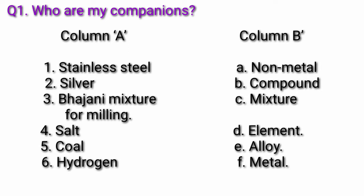Column B. A: Non-metal. B: Compound. C: Mixture. D: Element. E: Alloy. F: Metal.